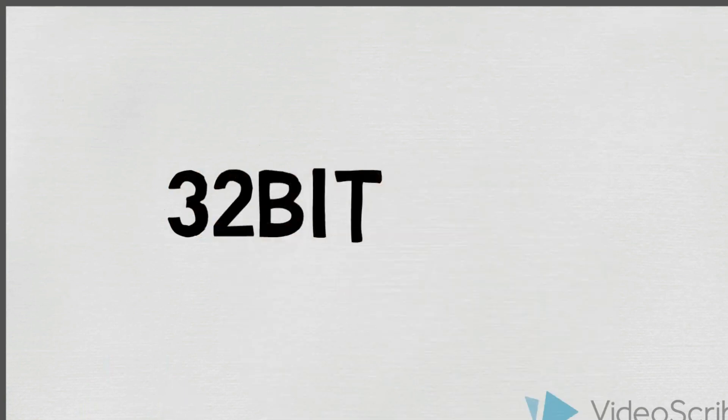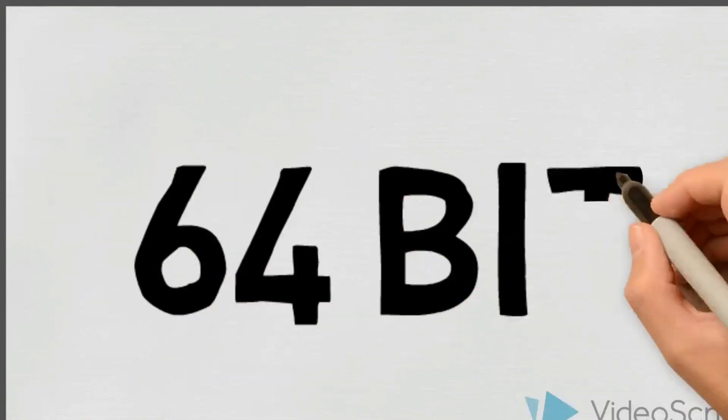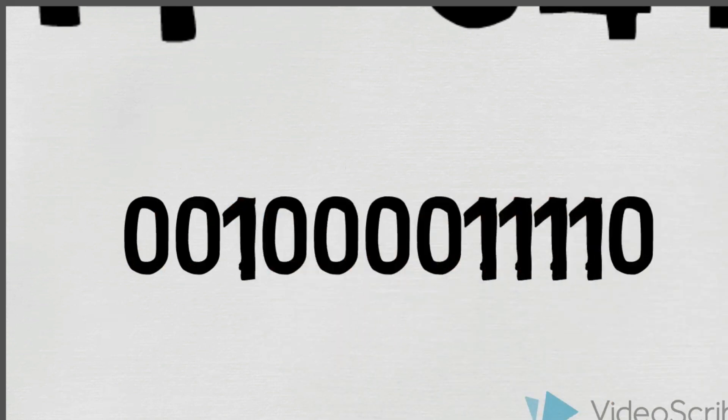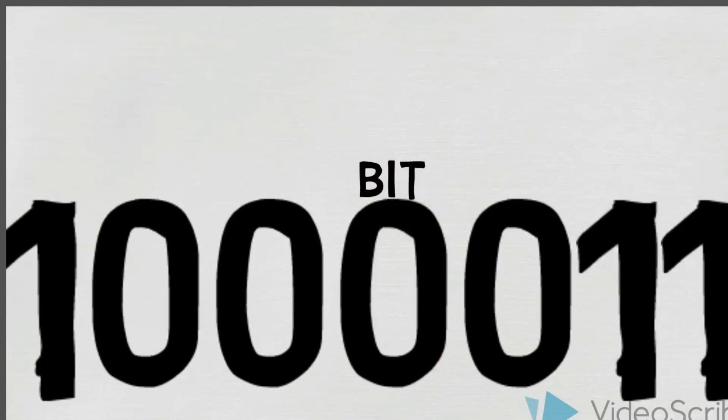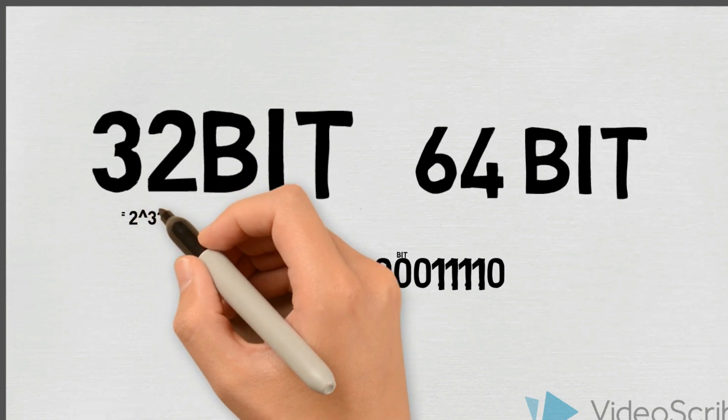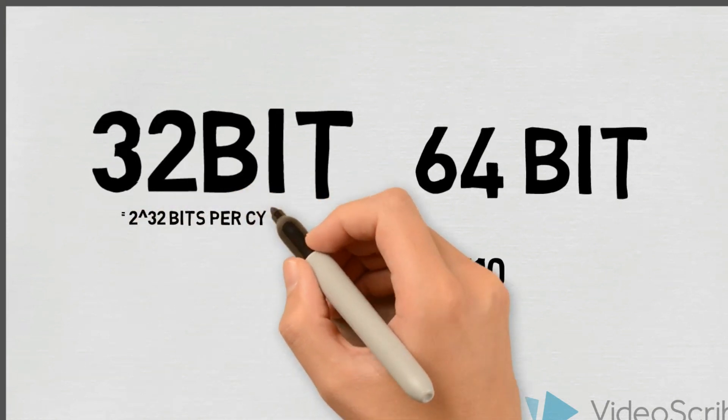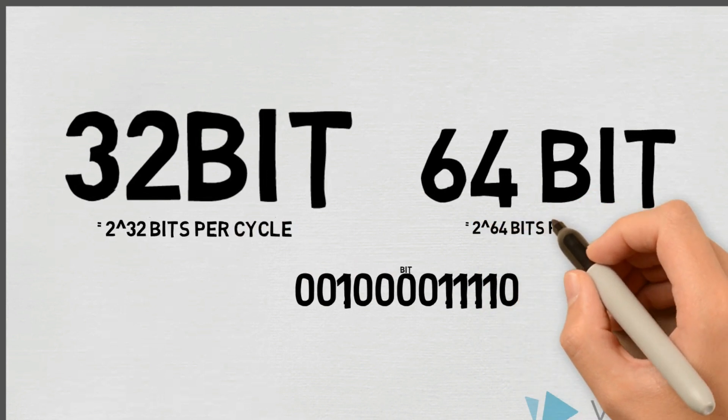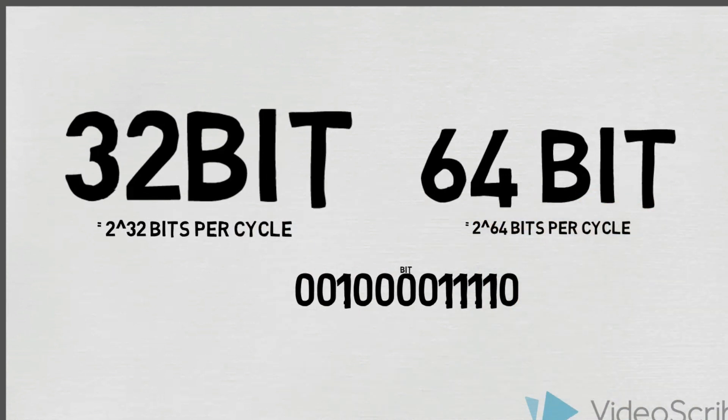CPUs can either be 32-bit or 64-bit. CPUs process data in binary and each individual digit is called a bit. 32-bit CPUs can process data in 2 to the power of 32 bits per cycle while 64-bit CPUs can process 2 to the power of 64 bits per cycle.